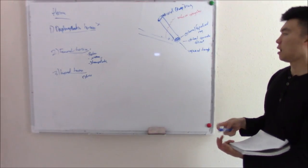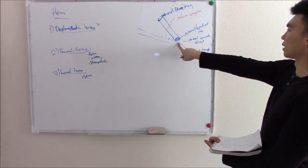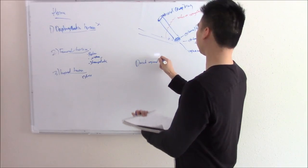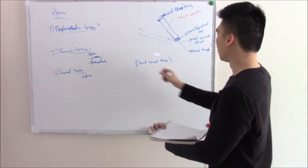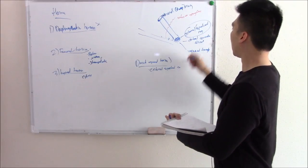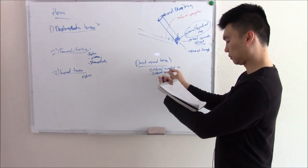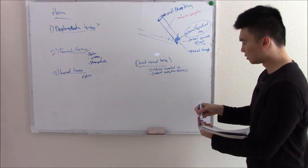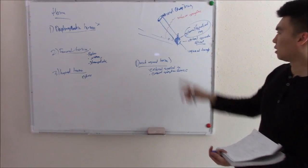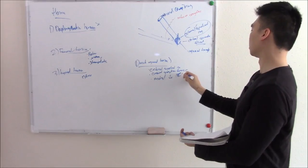Abdominal contents protruding through a weakness — what's the biggest weak point? Right here in the external opening. The superficial external ring is sometimes called the inguinal triangle — a major weak point. If abdominal contents protrude directly through that opening, we call it a direct inguinal hernia. It blows right through the external superficial ring, gets draped by the external spermatic fascia, and is medial to the inferior epigastric artery.